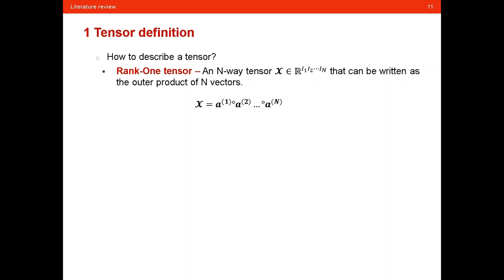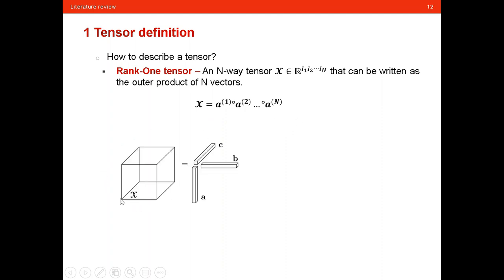There are some special tensors. A rank-one tensor is an N-way tensor that can be written as the outer product of N vectors. For a tensor of order three, it can be expressed as the outer product of three vectors. Using basic linear algebra, the outer product of two vectors produces a matrix, and the outer product of a matrix and a vector naturally produces a tensor of order three.